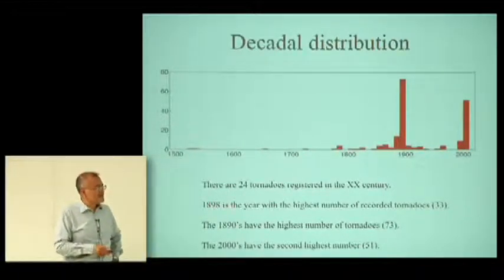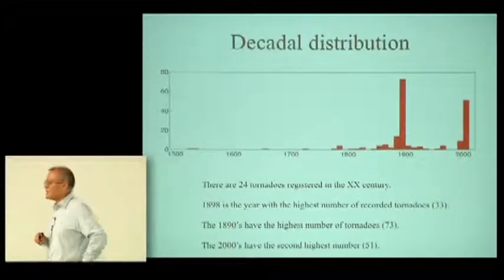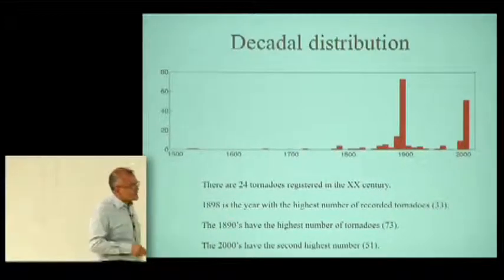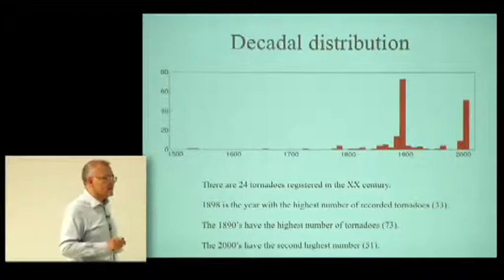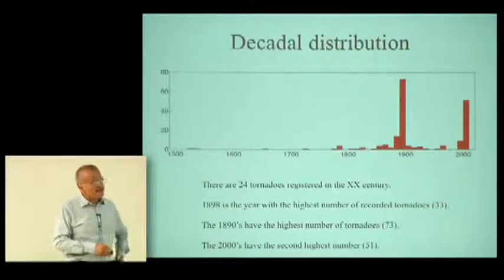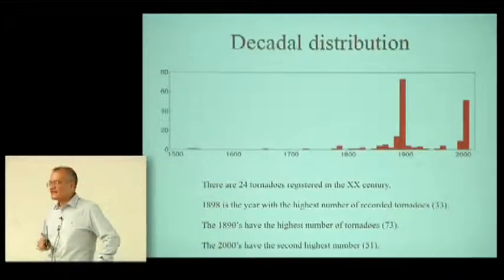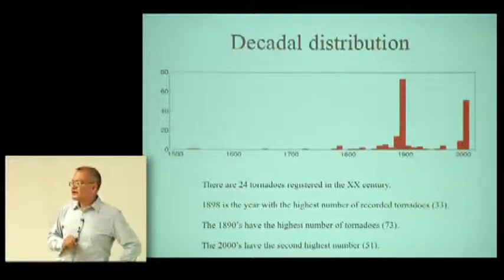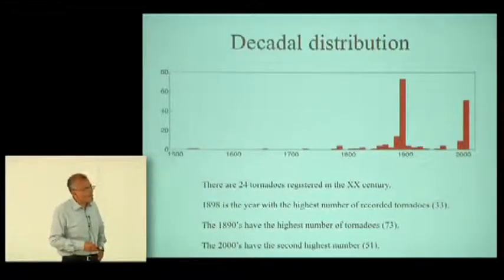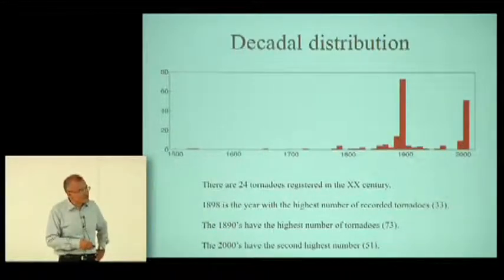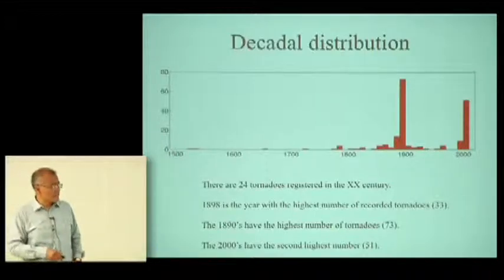In 1898 we had the largest amount of tornadoes: 33. Now remember what I said about under-reporting in the United States. If under-reporting in Mexico in 1898 was like under-reporting in the United States in the 1950s, then there were 330 tornadoes in that single year. If the under-reporting was the same as in the US in the 1920s, then there were 3,300 tornadoes in Mexico in 1898. So we really don't know what is going on. The last decade of the 19th century has the highest count at 73, and the first decade of this century has 51.